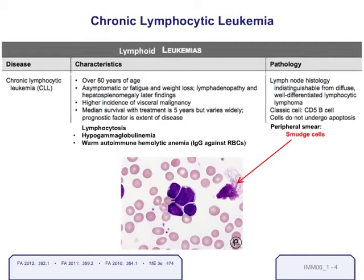The next cancer is chronic lymphocytic leukemia, CLL. ALL was more prominent in children, while CLL is much more common in older adults, generally greater than 60 years old. These patients can have CLL for many years and be completely asymptomatic — it's one of these indolent cancers. The way you usually diagnose it is by seeing smudge cells on the peripheral blood smear — lymphocytes that appear smudged, with blurry borders, like they were smashed down. When you see these smudge cells, you're thinking CLL.